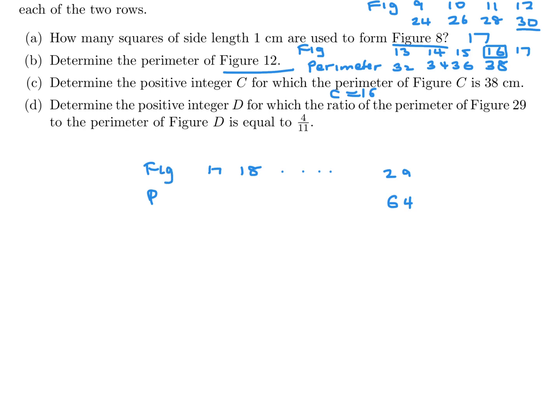And this was the figure number. And they're saying that the ratio of the perimeter of Figure 29, which is 64, to the perimeter of Figure D, so we'll just call that perimeter D, is 4 to 11. Cross multiply and solve this, and you'll get P_D is equal to 176. So again, you're just extrapolating this to 176. And when you do the math, this comes out to be 85. Because remember, the perimeter just goes up by 2 every time. So you can easily figure out that that would be Figure 85. So D is equal to 85. That's the integer that they're looking for.